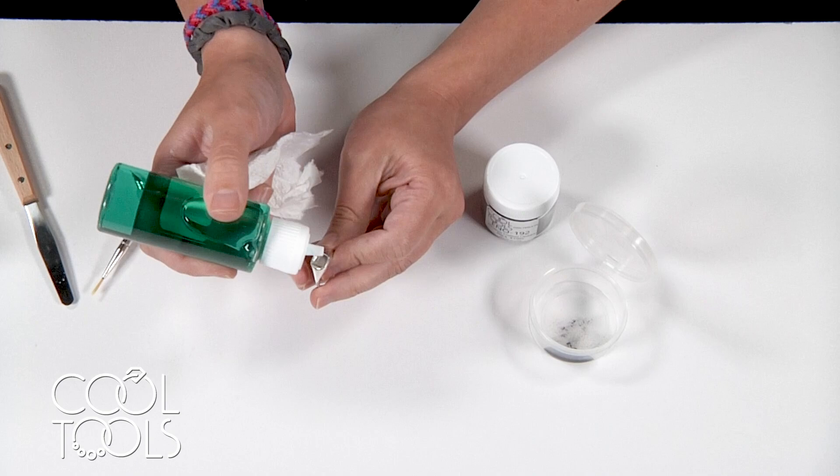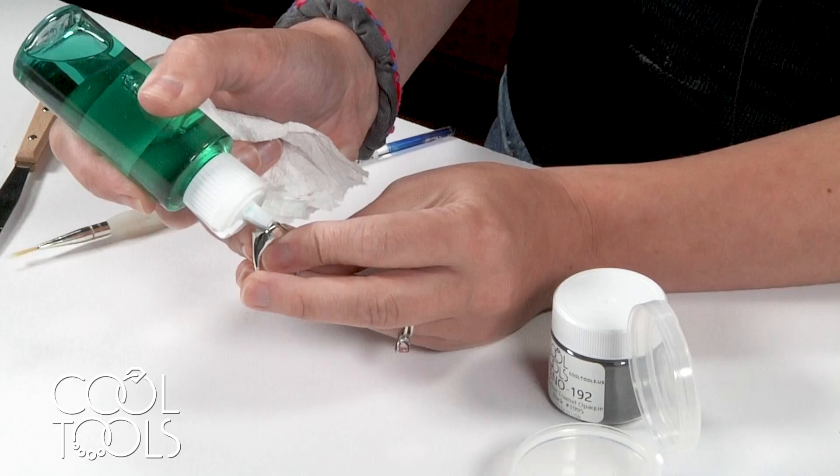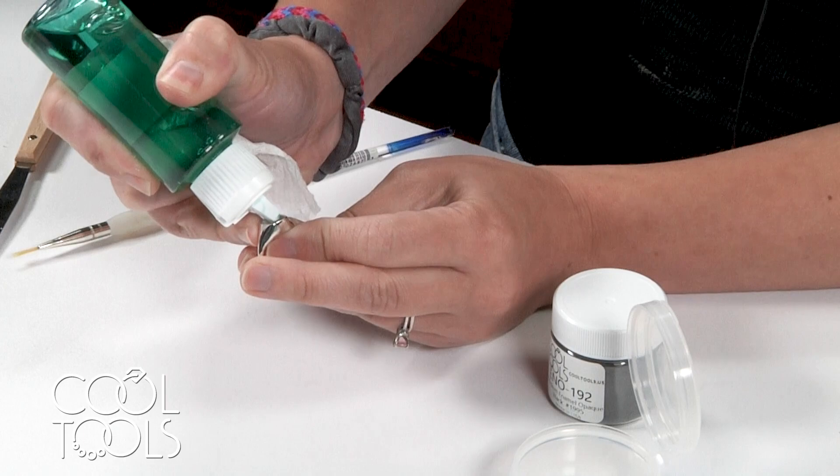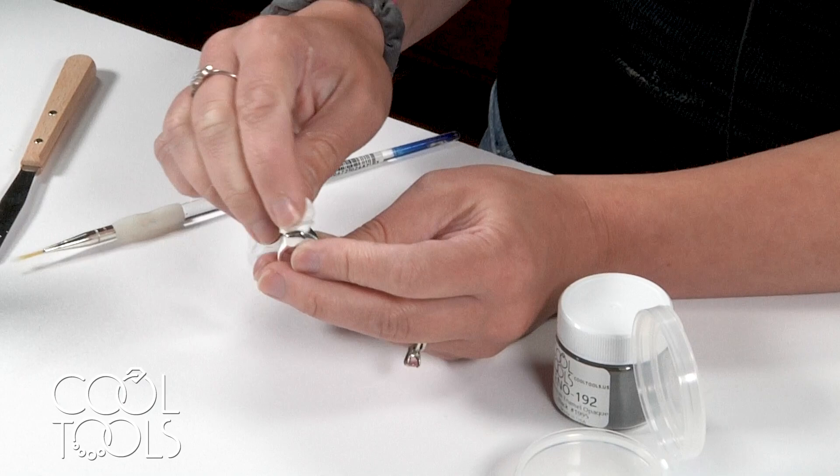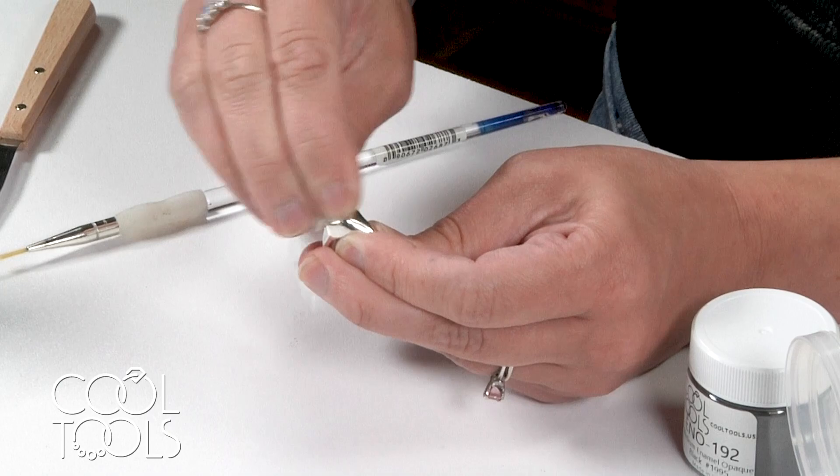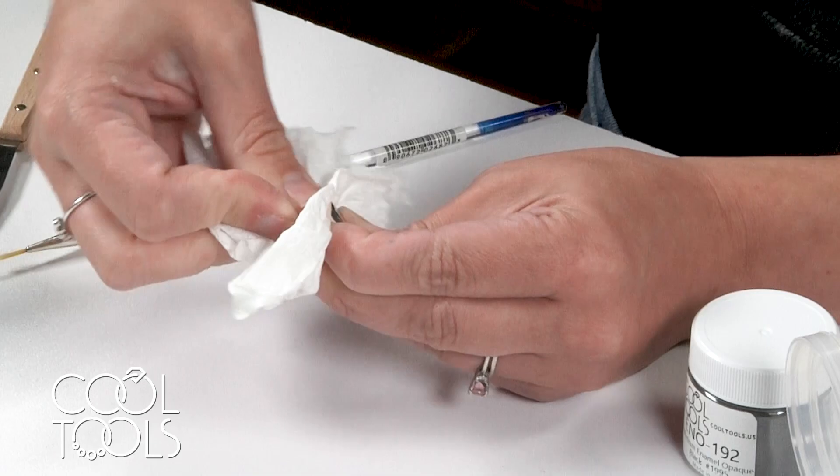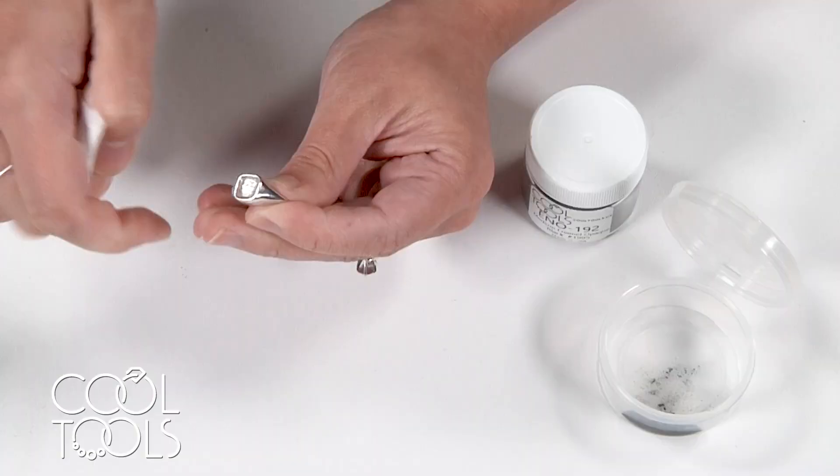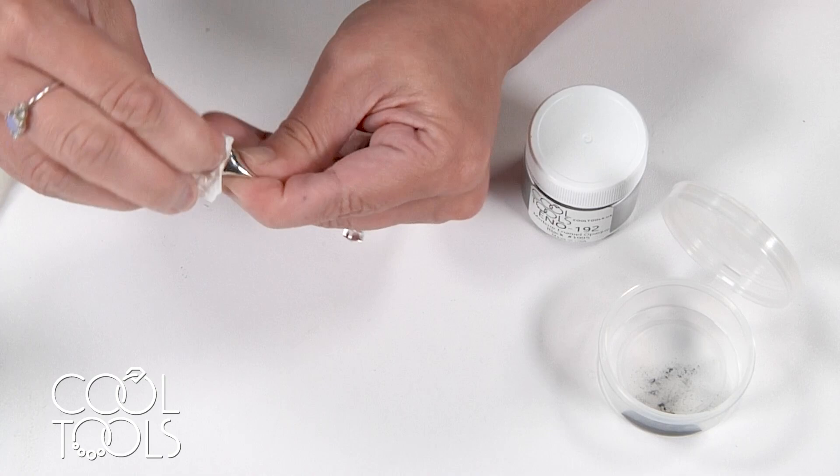Before we apply any enamel to our piece, we want to ensure that it's clean. I'm just going to use the surfactant and just try to get a tiny blop on there. That's going to be plenty. I just have a scrap paper towel, making sure to work it into that area and then just wipe away the excess because enamel does not play well with grease, so we want to make sure that it's clean before we apply any.